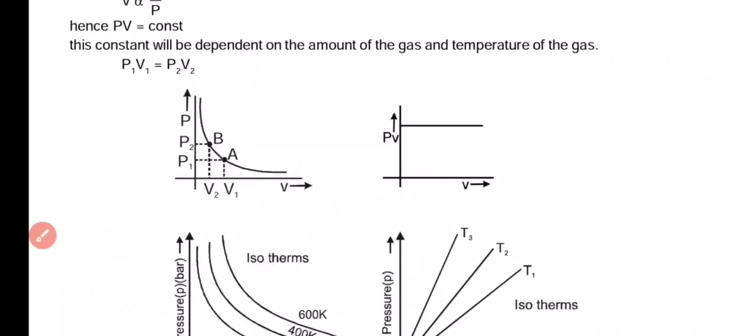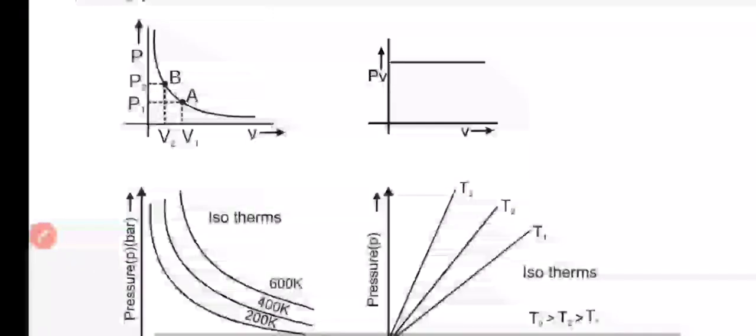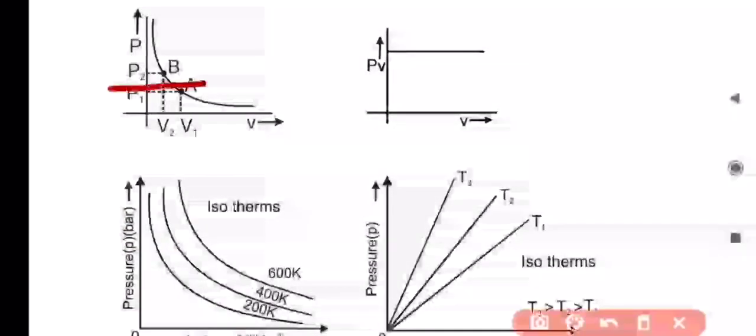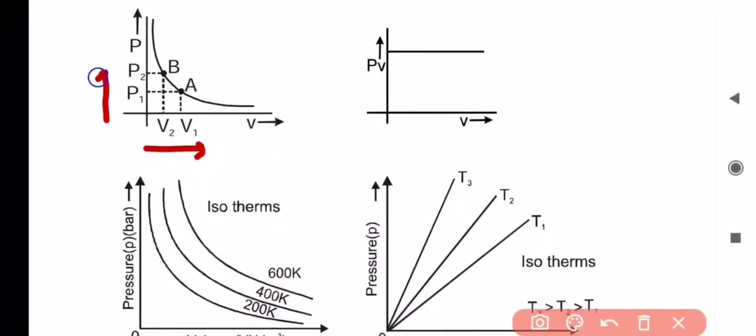There are some graphs which show the same. In the first graph we can see when the volume increases the pressure is less in V₁ and P₁, and when pressure is high volume is less, which says that PV is constant.